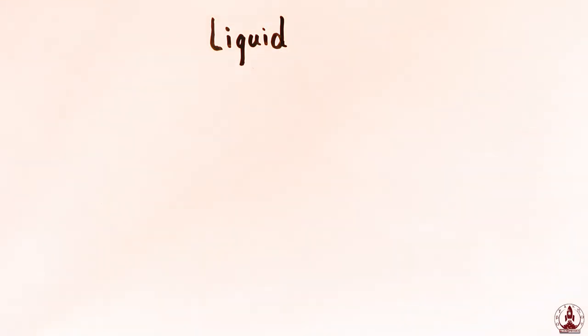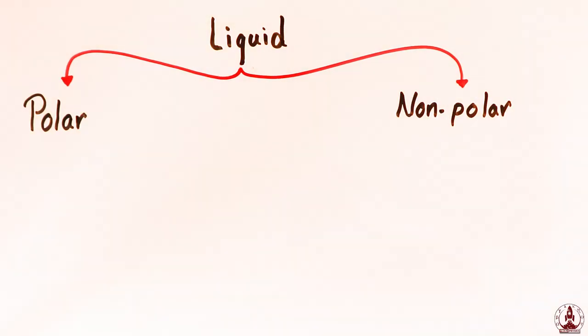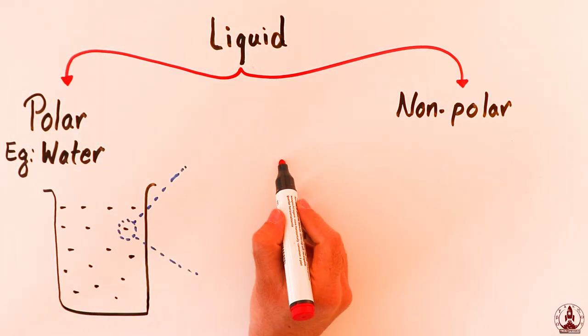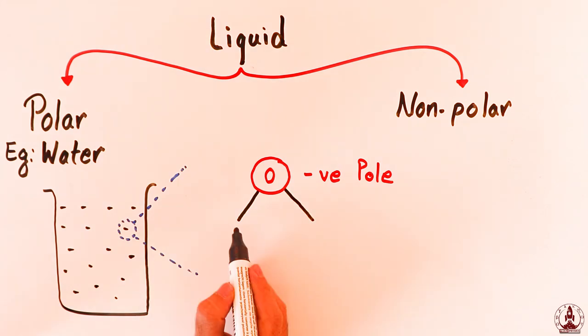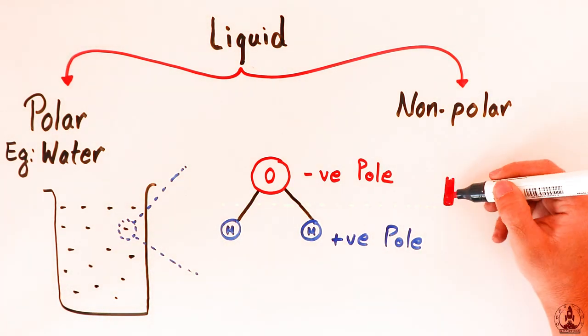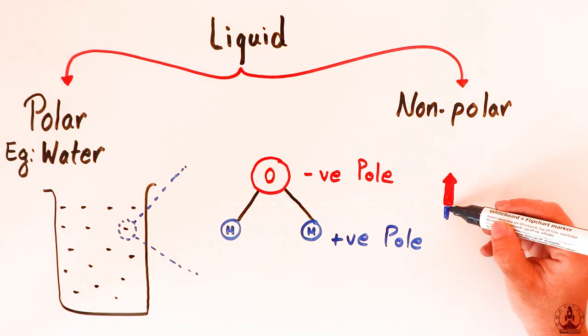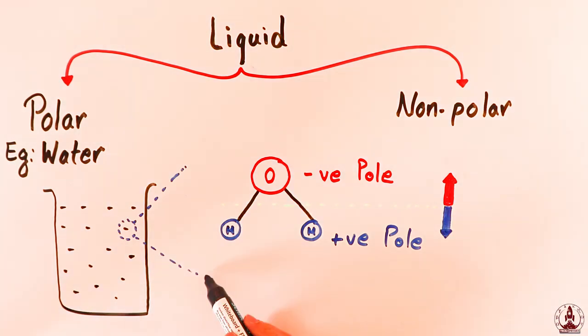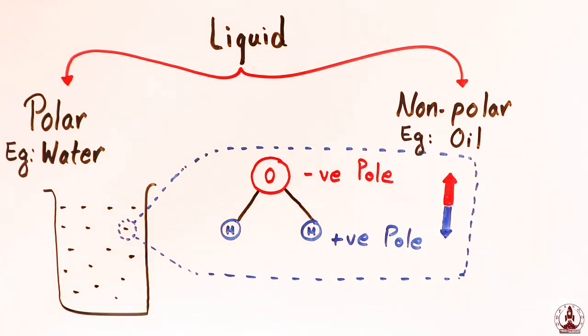In general, you can divide the world of liquids in terms of solubility, roughly speaking into two types: polar and non-polar. The classic example of a polar molecule is water. It is called polar because if you zoom inside, you will find the molecule of water has two poles - negative side towards oxygen and positive towards hydrogen - whereas oil is non-polar in nature.